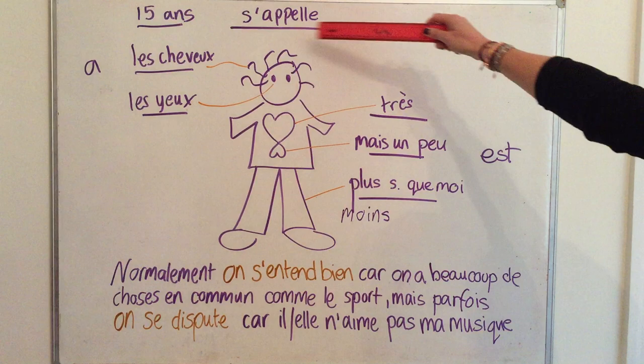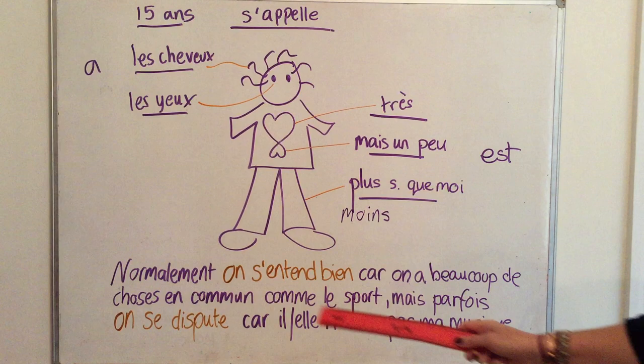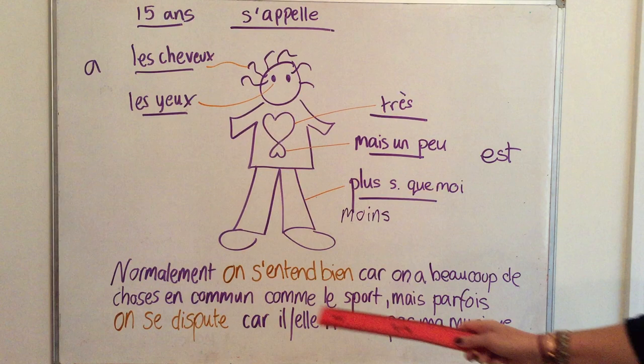To recap: name, then three avoirs with age, hair and eyes, then three être with very, but a bit, and more sporty than me, and then a lovely summary saying 'normalement on s'entend bien, mais parfois on se dispute', but with extended reasons for both. Merci, au revoir.